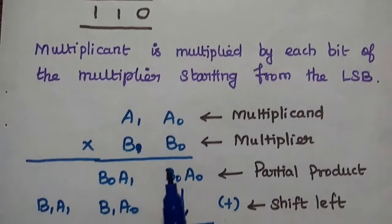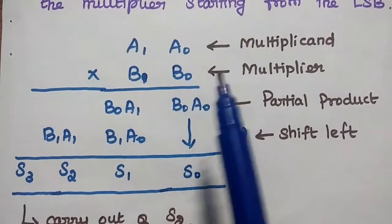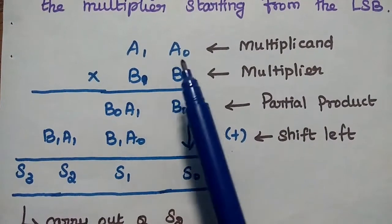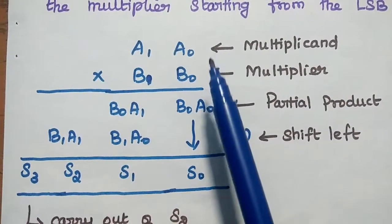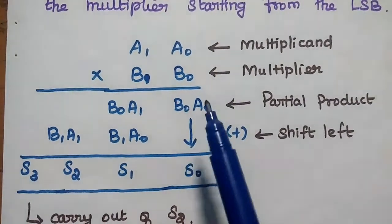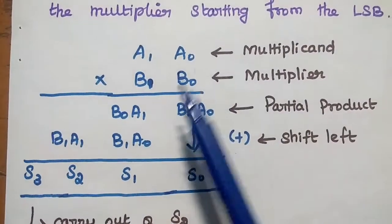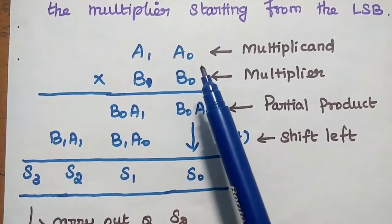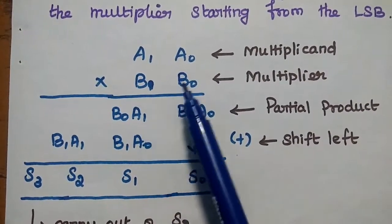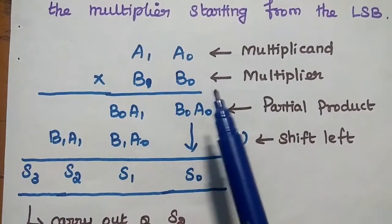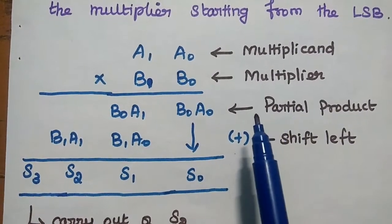From this process we can see that for a 2-bit multiplier, we have A1 A0 as the multiplicand, where A0 is the least significant bit, and B1 B0 as the multiplier. The first step is to generate partial products by multiplying the multiplicand with each bit of the multiplier — giving us A0 B0 and A1 B0.